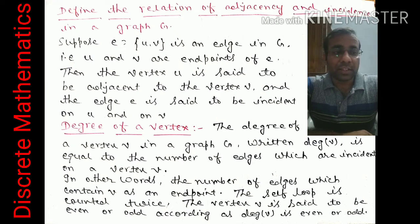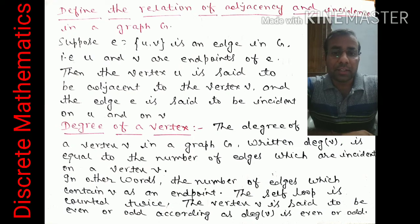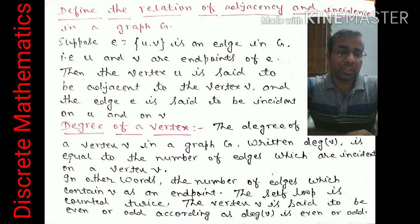Now we define the degree of a vertex, which is very important. The degree of a vertex v in a graph G, written deg(v), is equal to the number of edges incident on vertex v — that is, how many edges pass through or connect to that vertex. In other words, it is the number of edges which contain v as an endpoint.